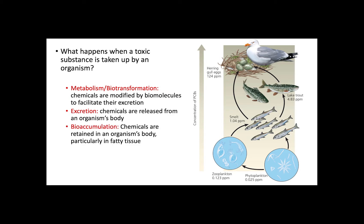Next, we have biological accumulation or bioaccumulation. This applies to chemicals that are fat-loving and water-hating. Therefore, instead of being excreted, these chemicals end up accumulating in different tissues, especially those with high fat content. Examples of these chemicals include metals, PCBs, and the most recent and famous perfluorinated compounds, like Teflon.